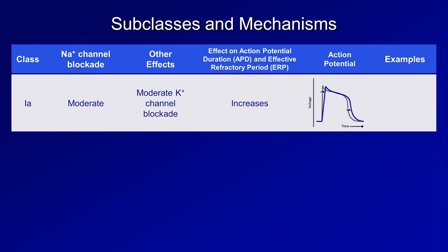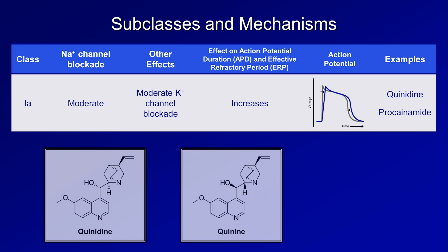Examples of 1a drugs include quinidine and procainamide. Quinidine was one of the first antiarrhythmic drugs used specifically for its antiarrhythmic properties. Interestingly, quinidine is a stereoisomer of quinine, both of which are derived from the bark of the cinchona tree of South America and are used for malaria.